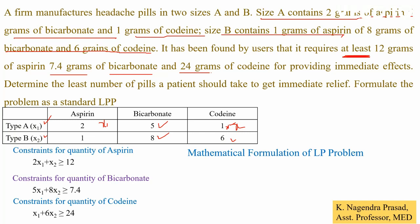The mathematical formulation of this LP problem is: minimize Z equal to x1 plus x2, subject to the constraints: 2x1 plus x2 greater than or equal to 12; 5x1 plus 8x2 greater than or equal to 7.4; x1 plus 6x2 greater than or equal to 24; and the non-negativity condition x1, x2 greater than or equal to 0.